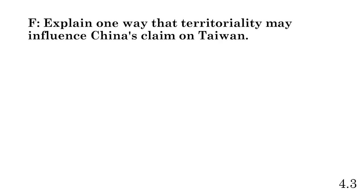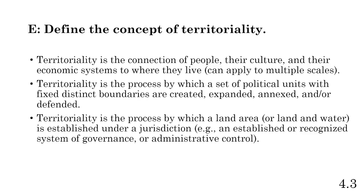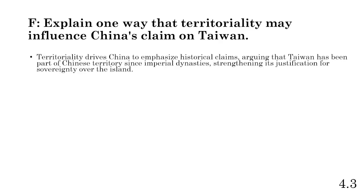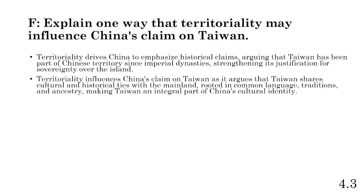Part F: explain one way that territoriality may influence China's claim on Taiwan. A sample answer could be that territoriality drives China to emphasize historical or cultural claims, arguing that Taiwan has been part of Chinese territory or culture since imperial dynasties, which strengthens their justification. Territoriality also influences their claim as China argues Taiwan shares cultural and historical ties.